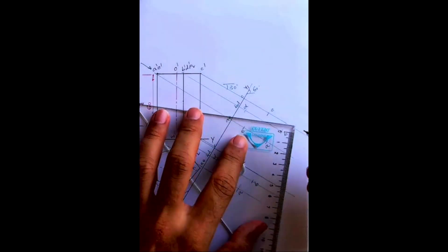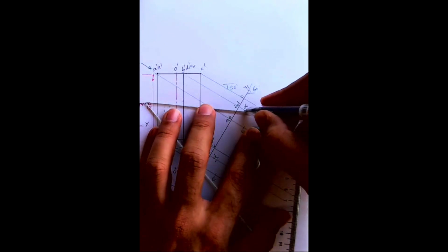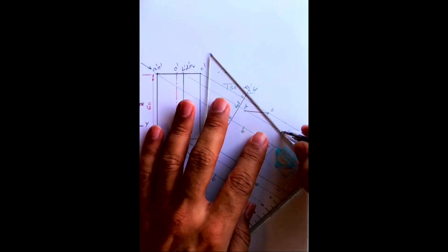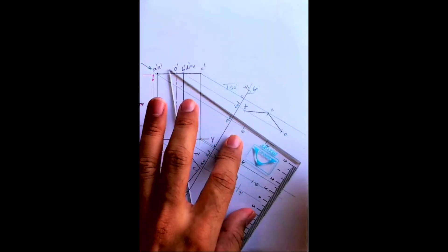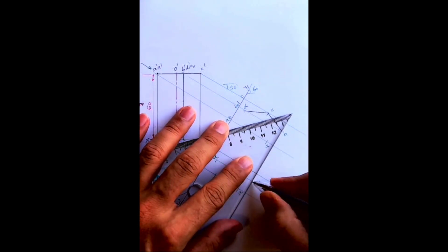So first we'll join the boundary lines, and the upper part will be dark. That much we can do first. See, first I'm drawing boundary lines.